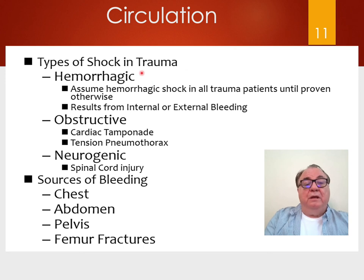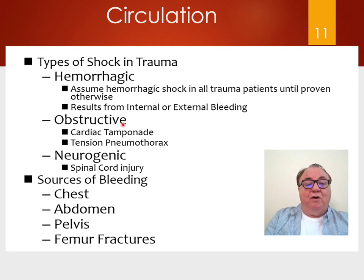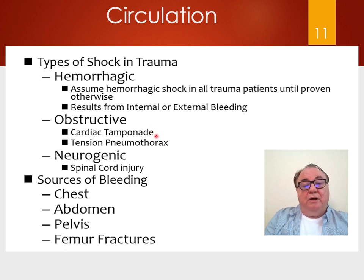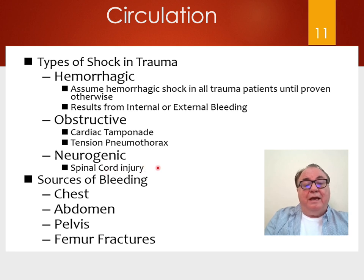In trauma, you must assume hemorrhagic shock until proven otherwise. It can result from internal or external bleeding. There can be obstructive causes of shock — cardiac tamponade or tension pneumothorax. Cardiac tamponade is treated with drainage of the pericardium; tension pneumothorax with placement of a chest tube. Neurogenic shock in spinal cord injury can be another cause. Sources of large volume bleeding include the chest, abdomen, pelvis, and femur fractures, all of which can result in shock.